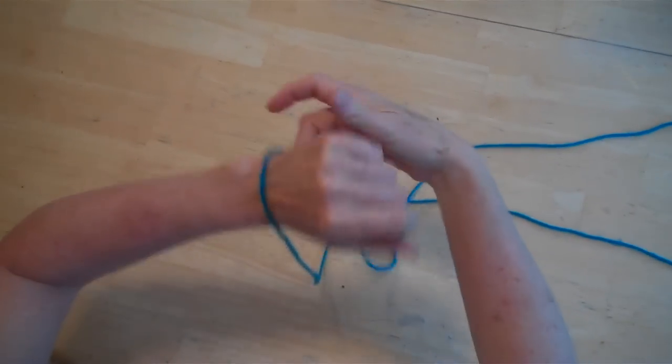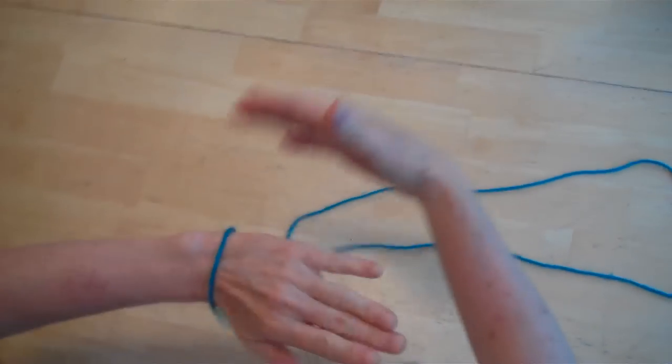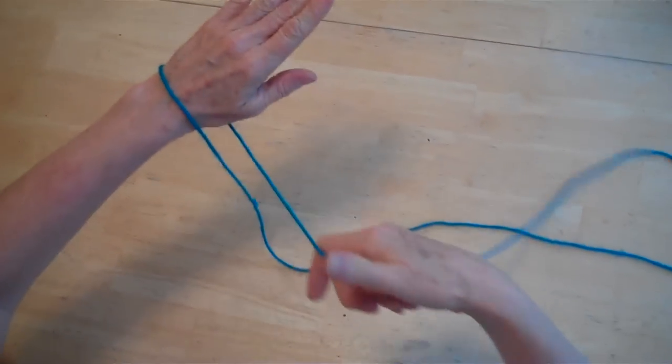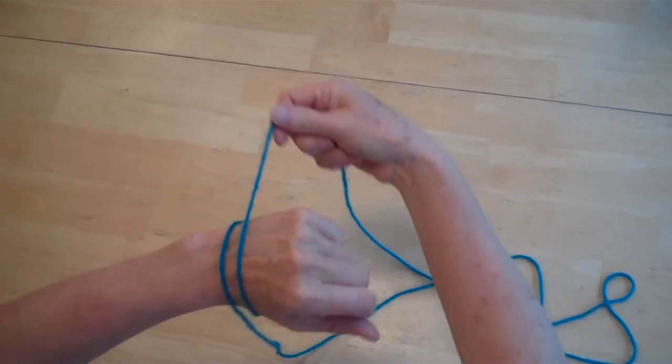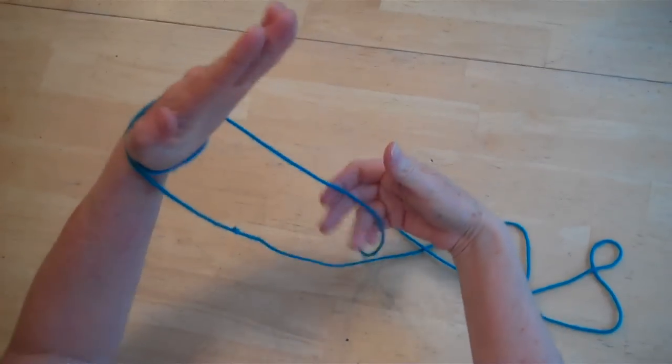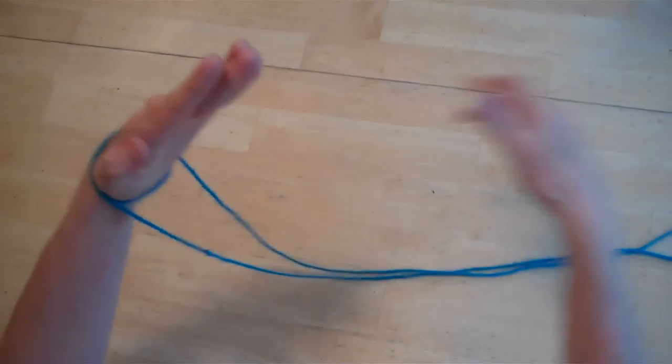Take your string loop and lay it over your left wrist, and the one that's behind, bring it around and wrap it around one more time. The rest of this will be hanging here.